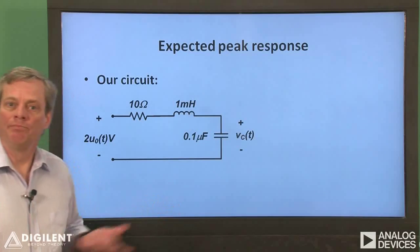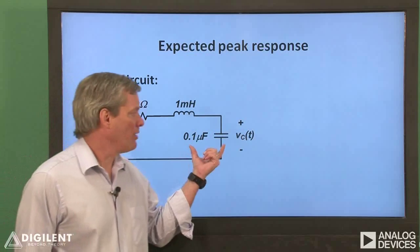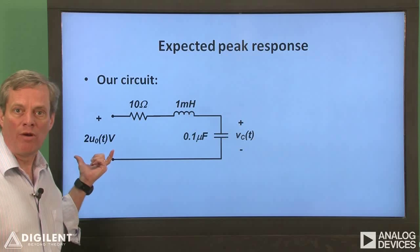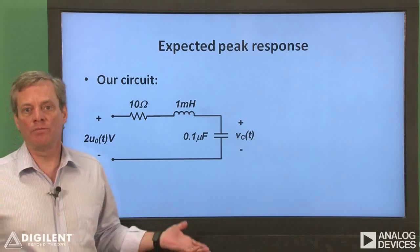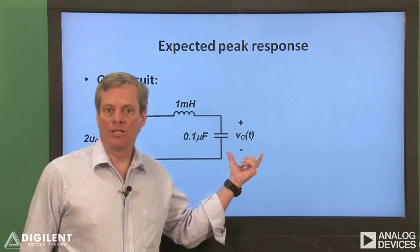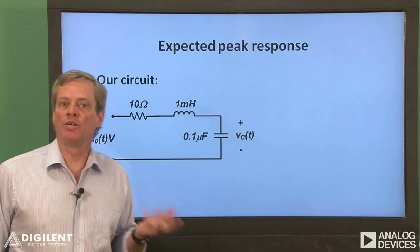Here's the circuit we'll be wiring up. We'll use a 10 ohm resistor, a 1 millihenry inductor, and a 0.1 microfarad capacitor. The waveform generator will apply a 2 volt square wave with a low enough frequency to appear to be a step function for all intents and purposes. We use channel 1 of our oscilloscope to measure the capacitor voltage, and channel 2 to measure the input voltage.